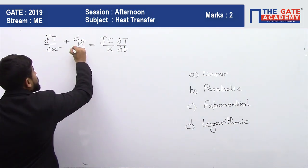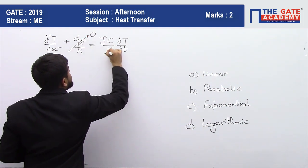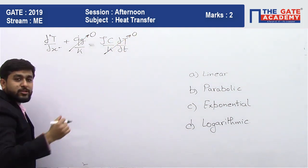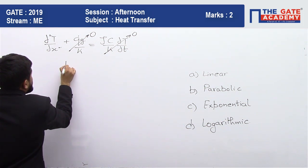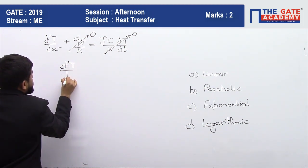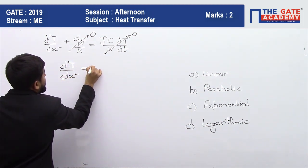Now based on our conditions, q dot g equals zero and since we are talking of steady state system, these terms will be zero. So you are directly left with del square t by del x square equal to zero.